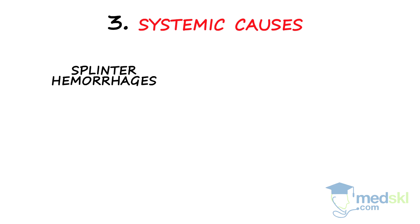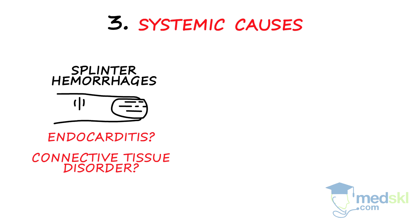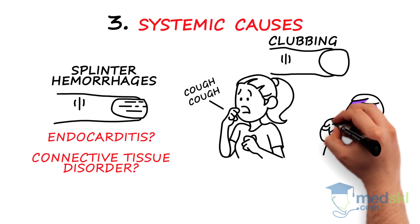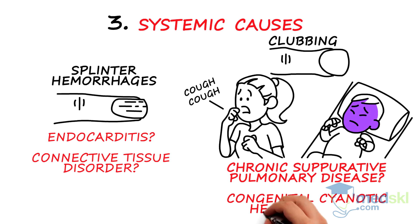Systemic causes of nail complaints. Splinter hemorrhages, which can be caused by local nail disorders such as trauma and nail psoriasis, can also be suggestive of systemic illnesses such as endocarditis and connective tissue disorders. Similarly, clubbing of nails can be seen in a variety of systemic diseases, including chronic suppurative pulmonary disease and congenital cyanotic heart disease.